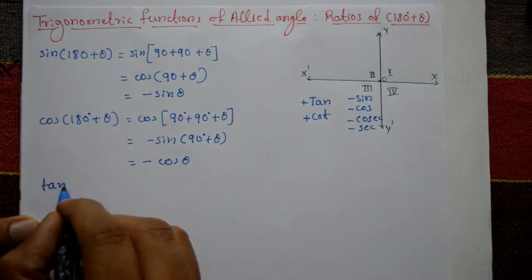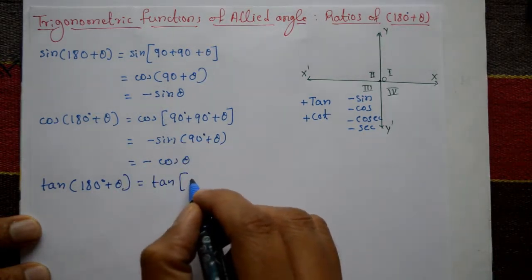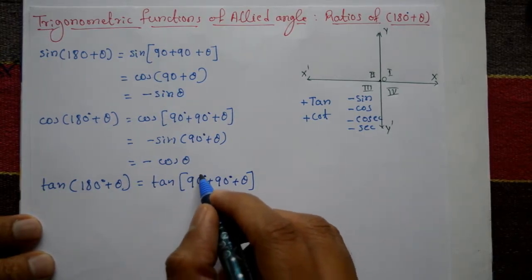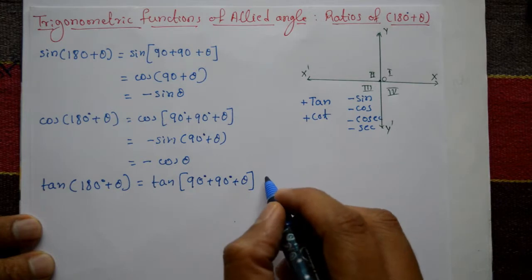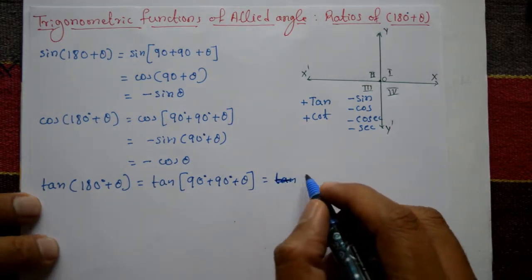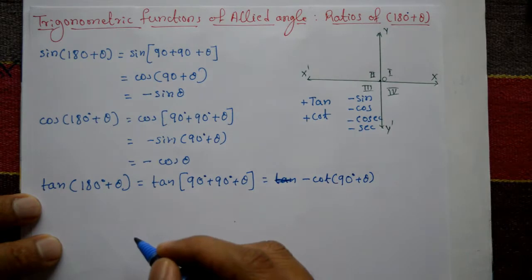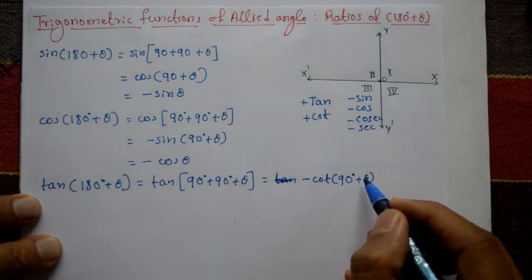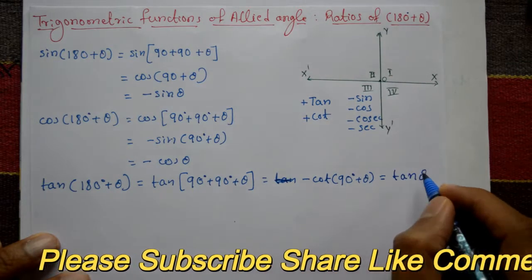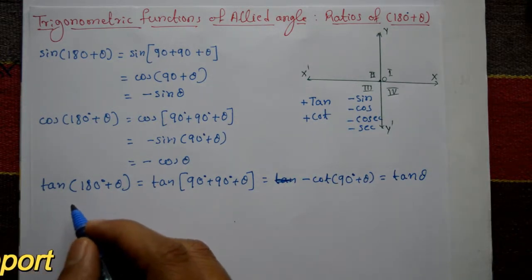Next, tan(180° + θ). Similarly, write it as tan(90° + 90° + θ). tan(90° + θ) = −cot θ, so tan(90° + (90° + θ)) = −cot(90° + θ). And cot(90° + θ) = −tan θ. So we get minus times minus, which is positive: tan(180° + θ) = +tan θ.